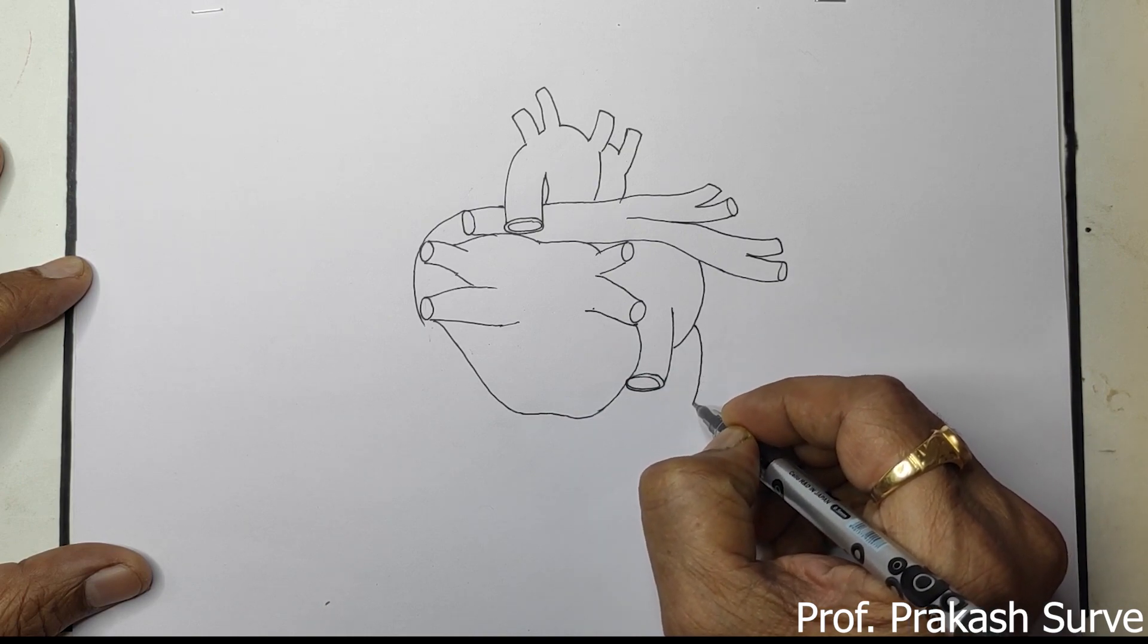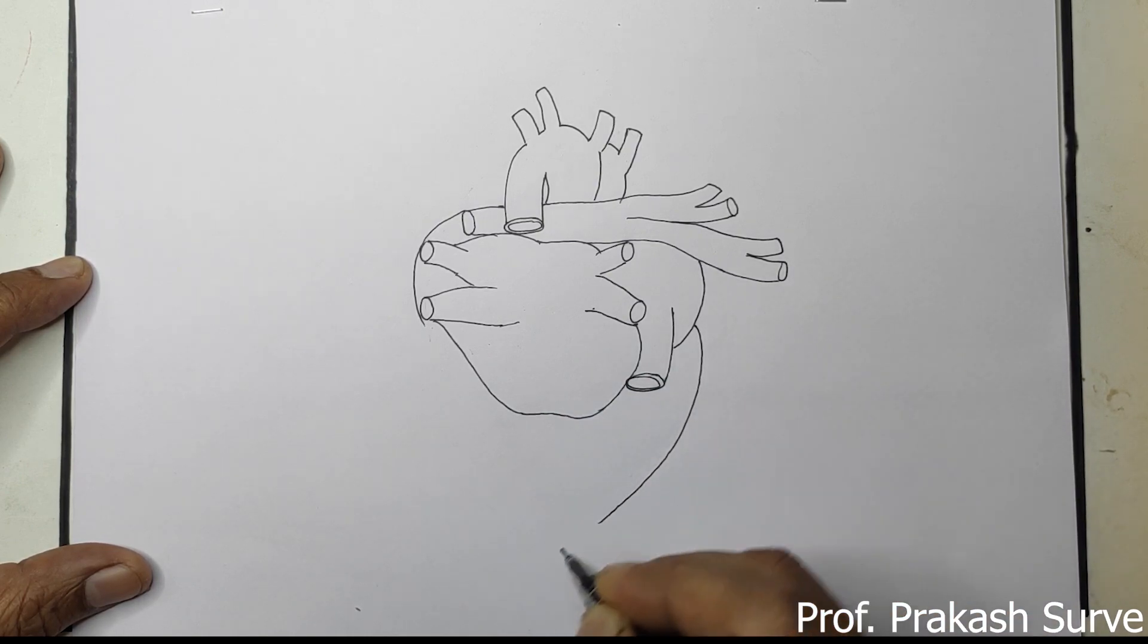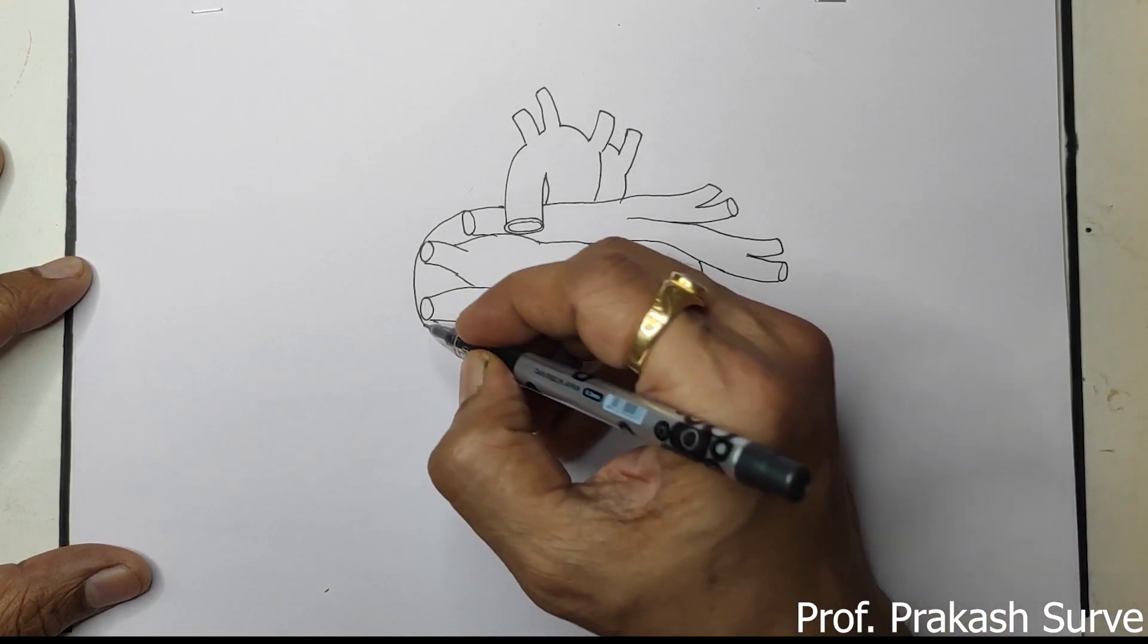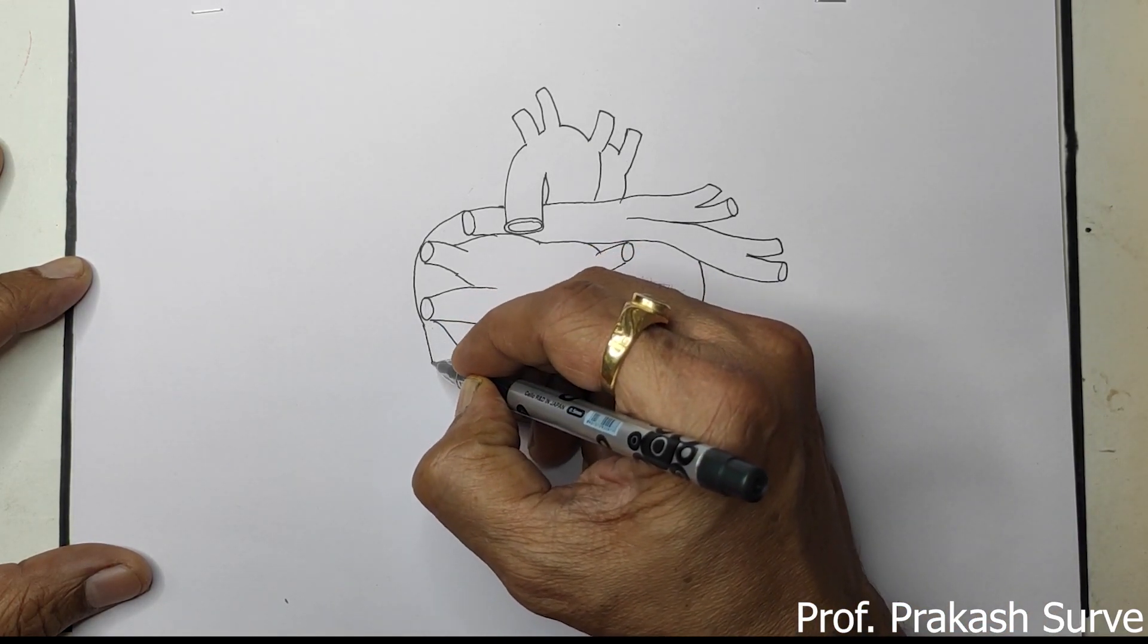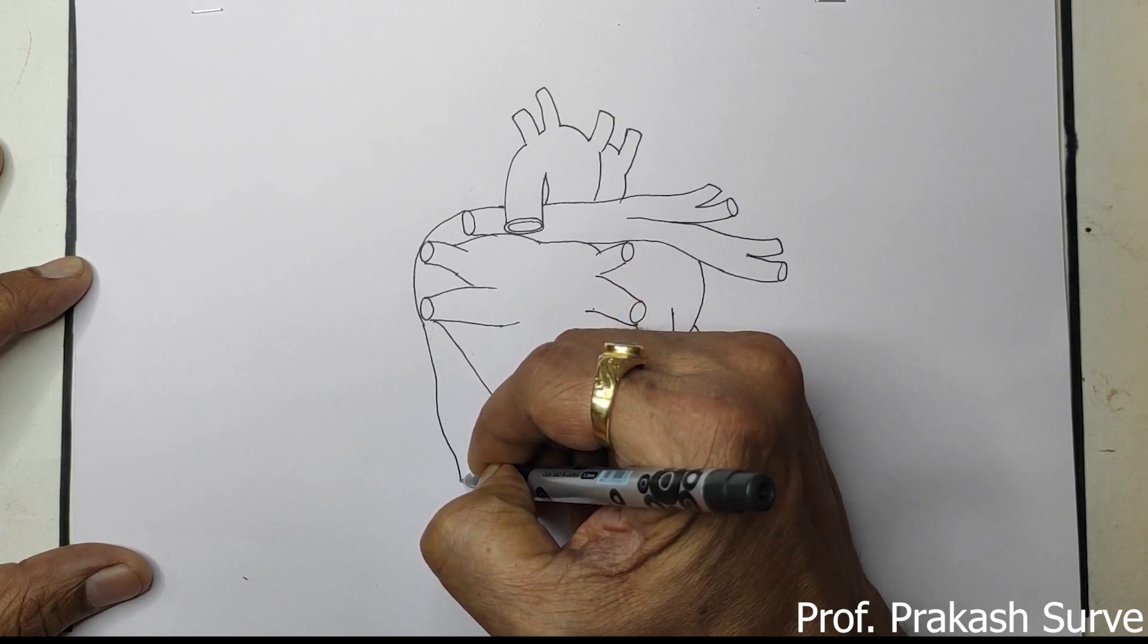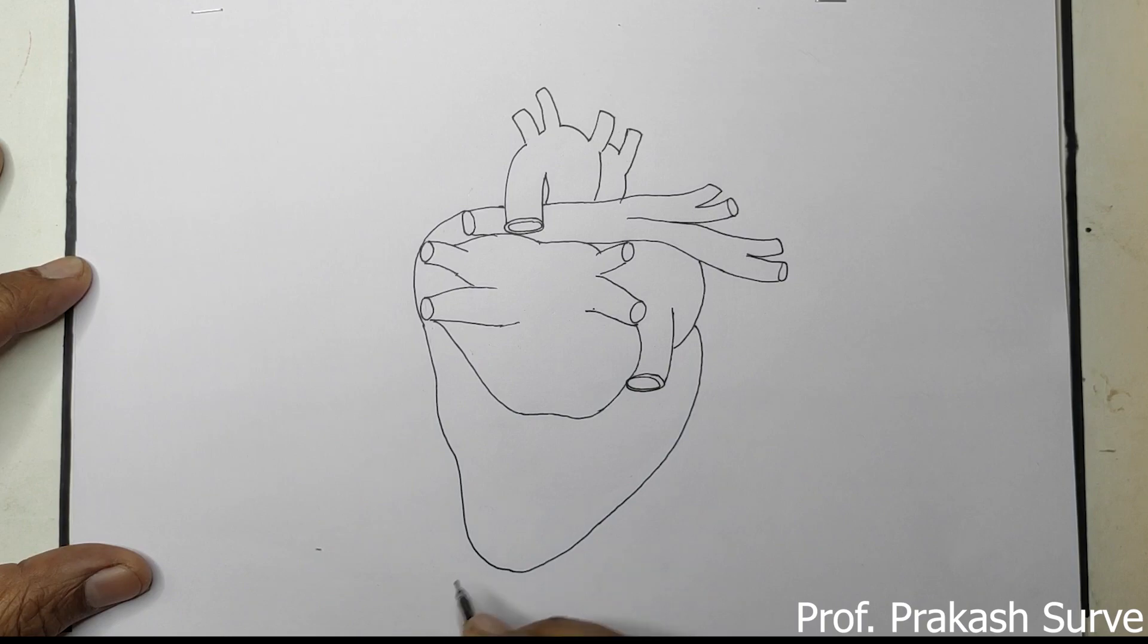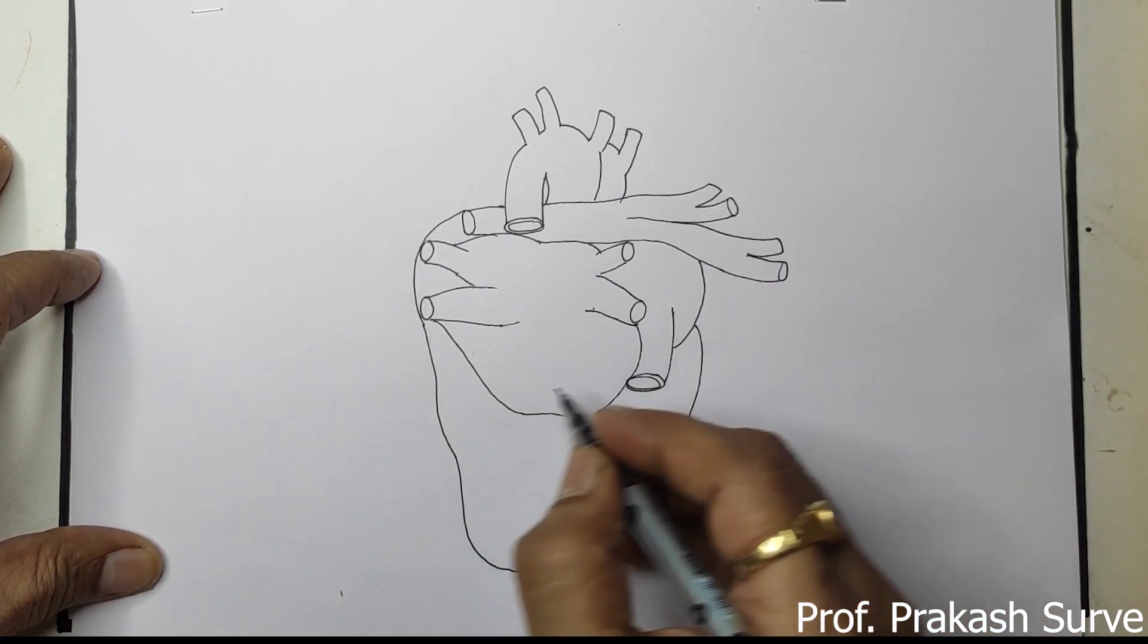Just continue, bring it down, so that here we'll get the ventricle. So this is the apex of the heart. So this rough structure we got. Now make the shading.